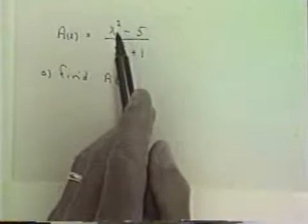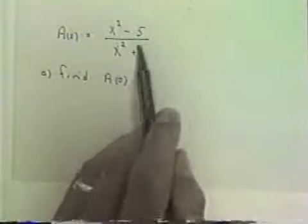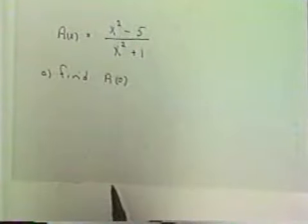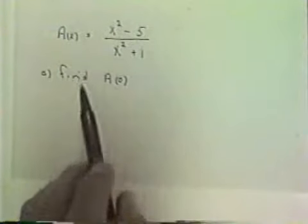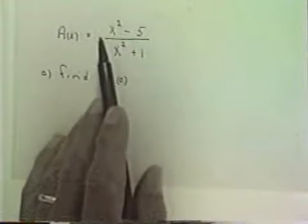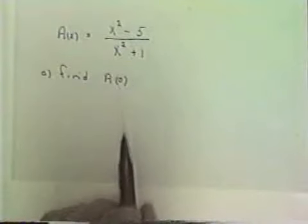Let's look at the algebraic fractional function a as a function of x is equal to x squared minus 5 over x squared plus 1. And let's find a evaluated at 0. So let's find the value of the function for x equal to 0.